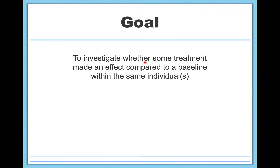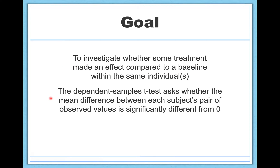The goal is to investigate whether some treatment makes an effect compared to a baseline within the same individuals. We're giving people a treatment and we want to know, did that treatment make a difference? So the Dependent Samples T-Test asks whether the mean difference between each subject's pair of observed values — the before and the after — is significantly different from zero. This will make more sense once I give you the example.